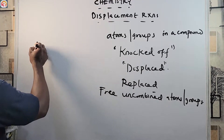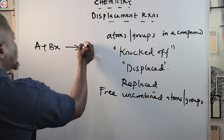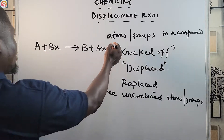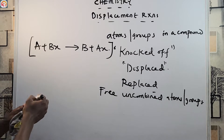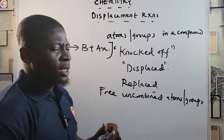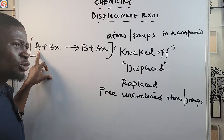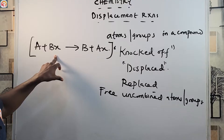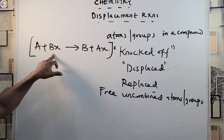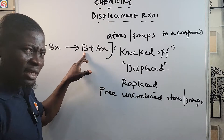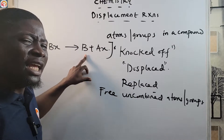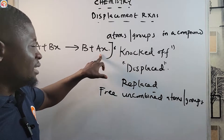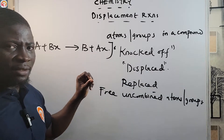Generally, displacement reactions take this form: A + BX → B + AX. This is the general form of a displacement reaction. What is happening here is that A, which was initially in the free or uncombined state, has knocked B off from the compound BX. In the product, B is now free or uncombined, while A has combined with X.